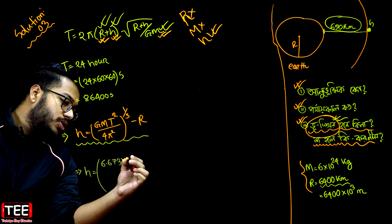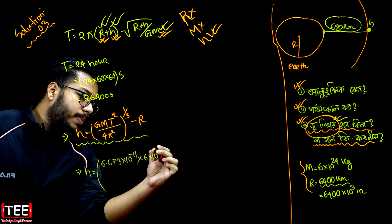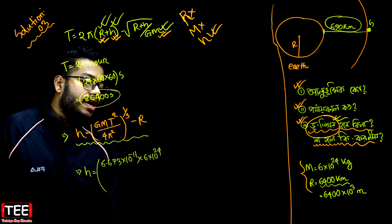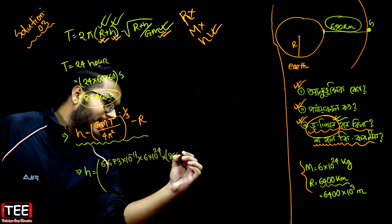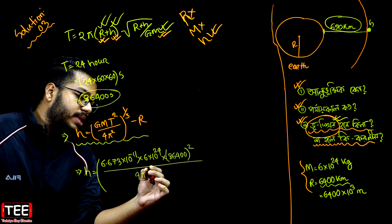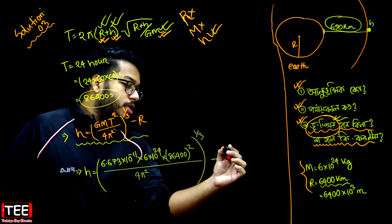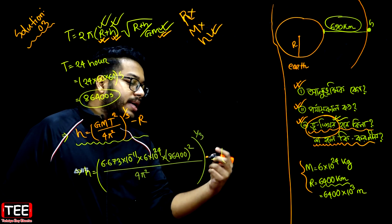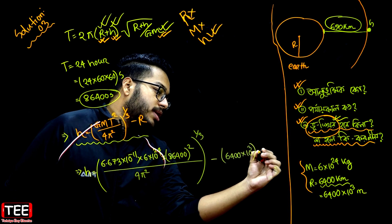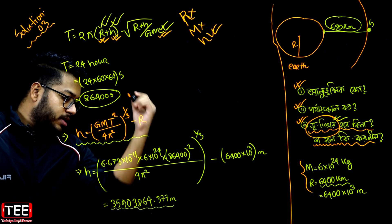G is 6.73 into 10 to the power minus 11. The mass of Earth M is 6 into 10 to the power 24 kg. T squared — the T value is 86400 seconds. R value is 6400 km. So directly, 6400 to the power squared. Divide by 4 pi squared, to the power 1 by 3. Then write this power 3 by 2. About SI unit: the value of 6400 into 10 to the power 3 meters. So we can calculate the result.